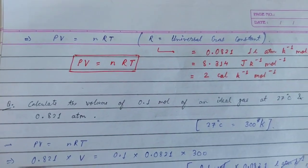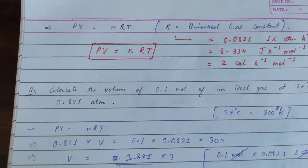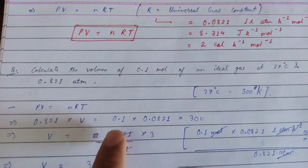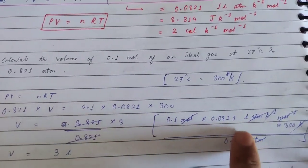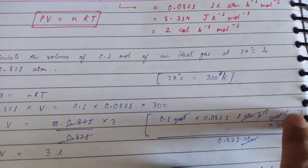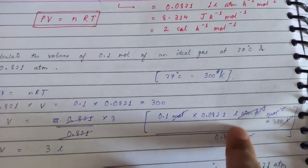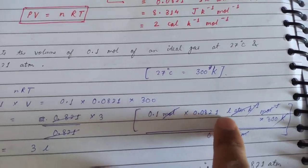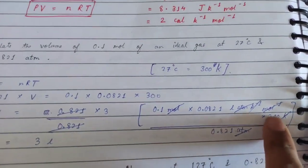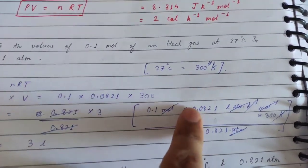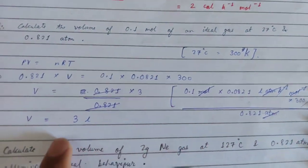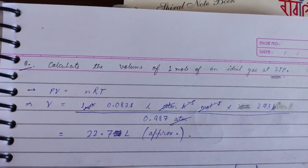To convert to Kelvin, we add 273: so 273 + 27 = 300 K. Now V = nRT/P, which becomes 0.1 mol × 0.0821 L·atm/K/mol × 300 K divided by 0.821 atm. Kelvin cancels with kelvin, mole with mole, and atm with atm. We get 0.0821 × 300 × 0.1 / 0.821 — the 0.821 cancels, giving us 3 litres. So the volume is 3 litres.